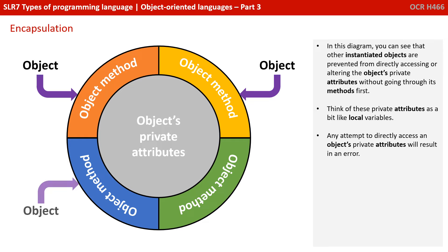In this diagram, you can see that other instantiated objects are prevented from directly accessing or altering the object's private attributes directly without first going through its methods. Think of these private attributes loosely, a bit like local variables. Any attempt to directly access an object's private attributes will result in an error.